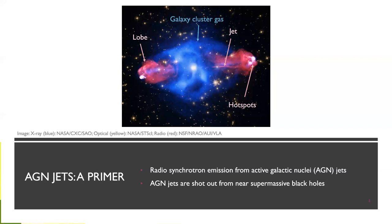Here we have an image of Cygnus A. Its radio emission is shown in the pinky-red, and we've got some X-ray emission shown in blue of the cluster gas. What these jets do is they are launched by supermassive black holes at the centre of the galaxies — the active galactic nucleus — and they expand out into the environment. Here we have a jet, this nice collimated structure ending in the hot spot and forming the lobe through backflow. That's the general anatomy of an AGN jet. This is what's known as a FR2, or Fanaroff-Riley class 2 source, and this is a type of source I generally simulate.